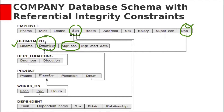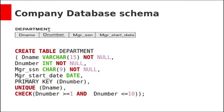These two tables — employee and department — have circular references, so we can create either of these tables first. If you create the department table, you need to omit this foreign key constraint during creation and add it later. Let us create the department table first. It contains four attributes: dName, dNumber, manager SSN, and manager start date. The dNumber is the primary key, and dName is also unique as it was a key attribute in the ER design. In the relational model we can have only one primary key, so we selected dNumber as primary key. The manager SSN is the foreign key coming from the employee table.